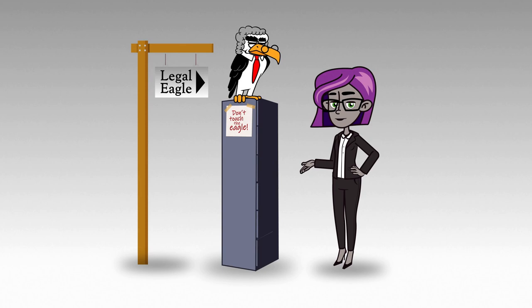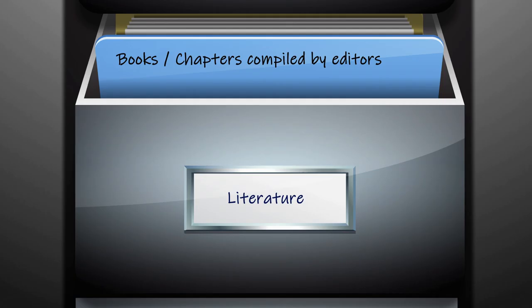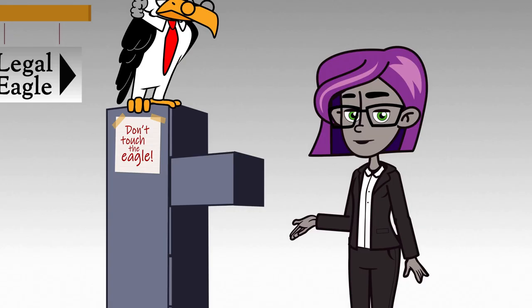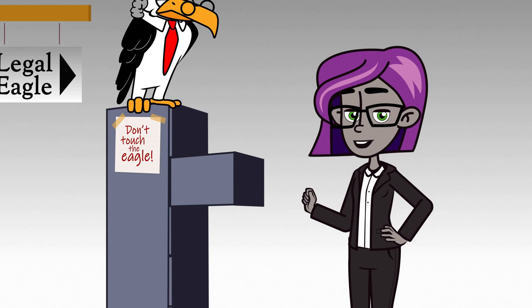In today's video, we will look at entries for books in the bibliography. These belong under the literature heading in your bibliography. My last video covered the layout of the bibliography. Remember, we are using the metaphor of a file cabinet to help wrap your heads around how different headings and source types are listed.